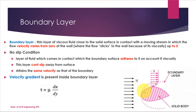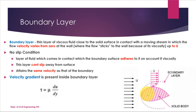The fluid particles very close to the boundary will be sticking onto the solid body. Their velocity will be the same as that of the solid body. Since the solid body is at rest, the velocity of those fluid particles will be zero. These fluid particles cannot slip away from the boundary — this condition is known as the no-slip condition.